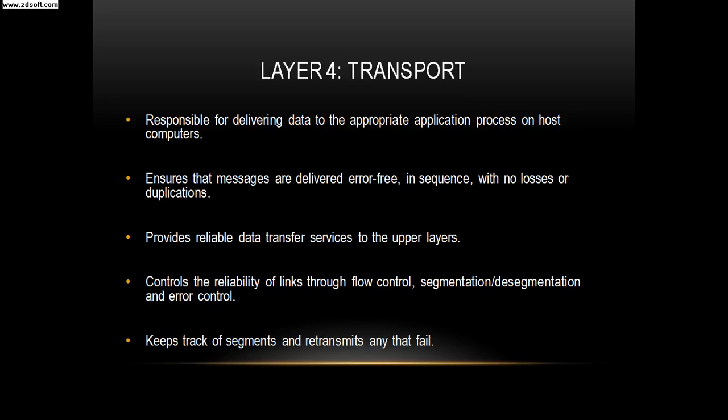The fourth layer is the transport layer. The transport layer is responsible for delivering data to the appropriate application process on host computers. It also ensures that messages are delivered error-free, in sequence, with no losses or duplications. It provides reliable data transfer services to the upper layers and controls the reliability of links through flow control, segmentation, desegmentation, and error control. It keeps track of segments and retransmits any that fail.